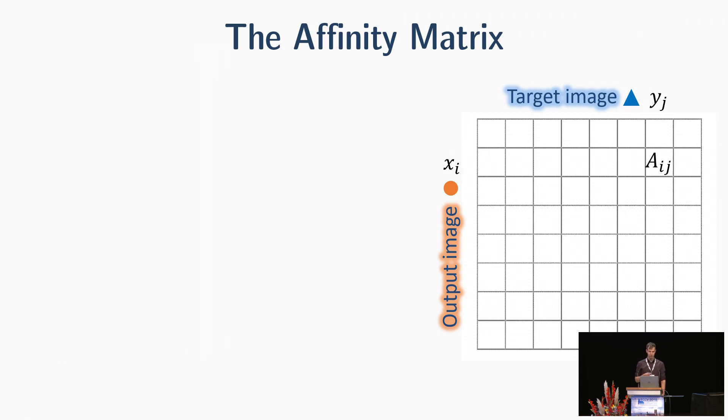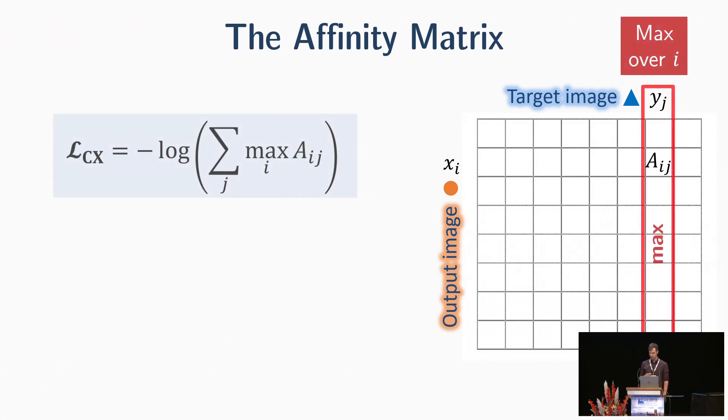We start by computing the full affinity matrix between the two point sets representing the images. The nearest neighbor field is obtained by taking the max over each affinity. That's here, the max over each row.